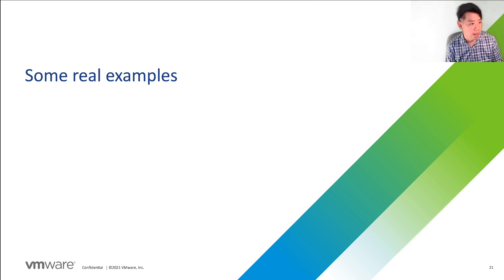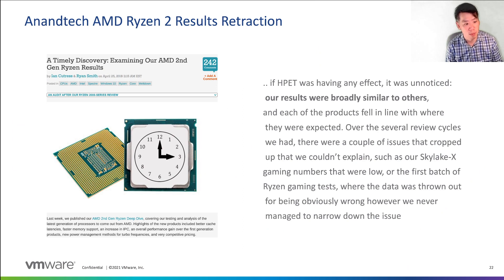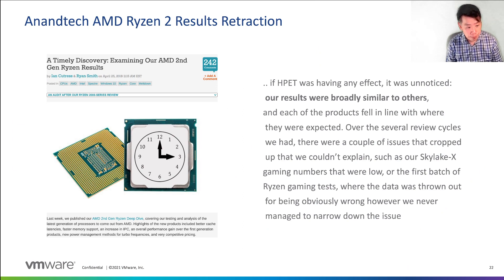I'll show you some real examples where timing errors cause real issues with experimental measurements. Perhaps the most famous result was Anandtech retracting their benchmarks for the AMD Ryzen 2. Anandtech is a pretty well-respected website that benchmarks new processors. In 2018, they published results for the AMD Ryzen 2 that blew Intel Skylake X out of the water. What actually happened was that the HPET in the Skylake X was much more expensive to query than before, resulting in Skylake performing poorly on the benchmark even though the actual performance was better. It was incredibly difficult for them to notice the issue, and if the results were closer, no one might have noticed the discrepancy at all.